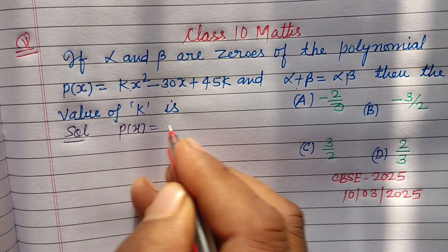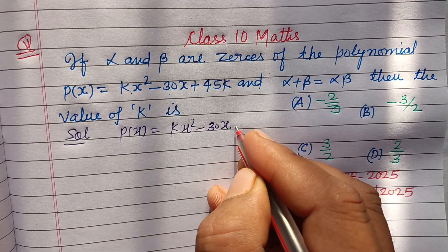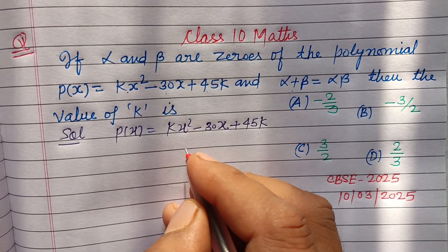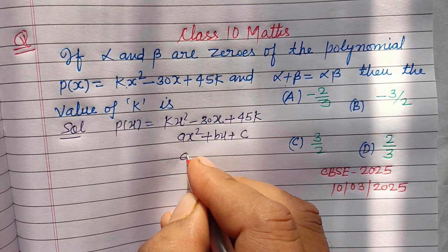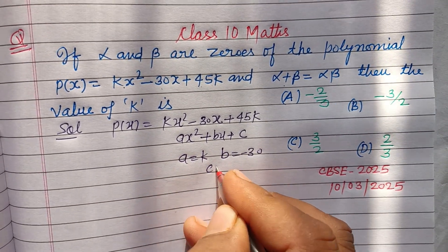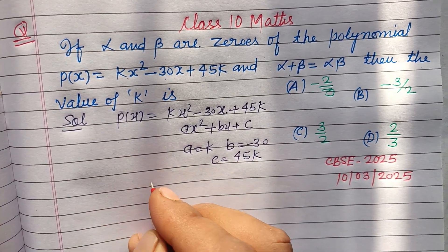This is a quadratic polynomial, so we compare it to ax² + bx + c. Here a is k, b is -30, and c is 45k.